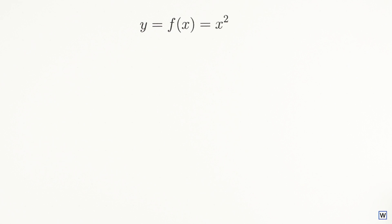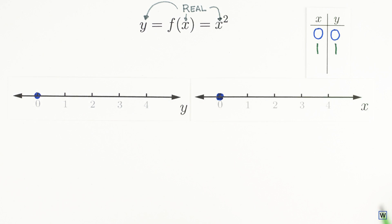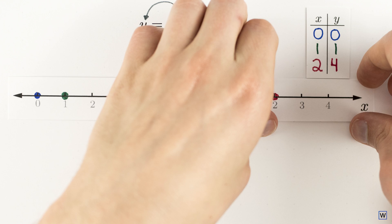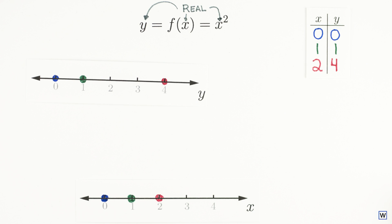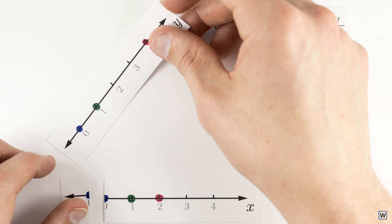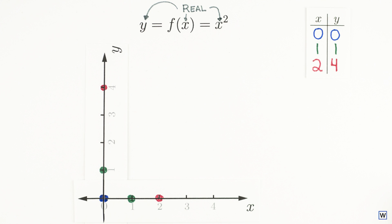The kinds of functions most of us are used to, functions of real numbers, have inputs and outputs that can be visualized using a single dimension. This means all our x values fit on a single number line, and so do our y values. It seems pretty reasonable then, that if we want to figure out how x and y are related, we should put our x number line facing one way on our piece of paper, and put our y number line on the same piece of paper, just facing the other way.